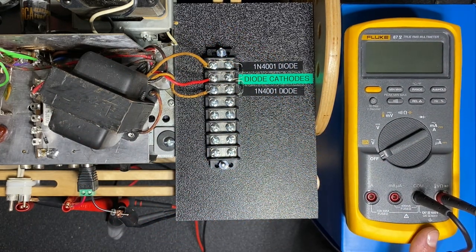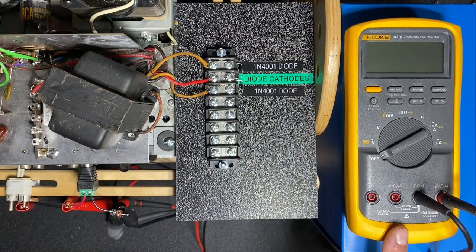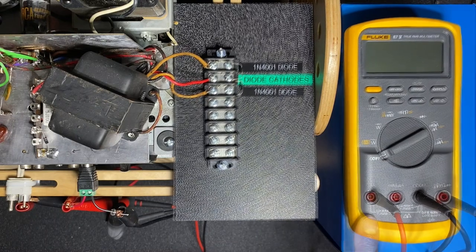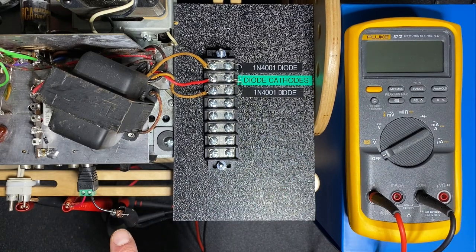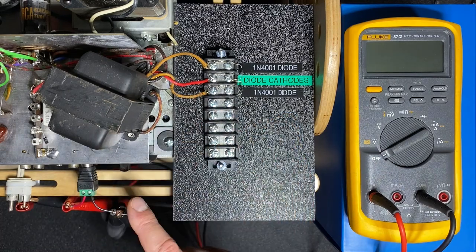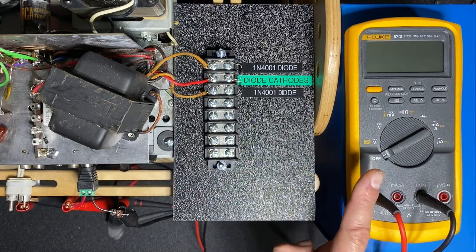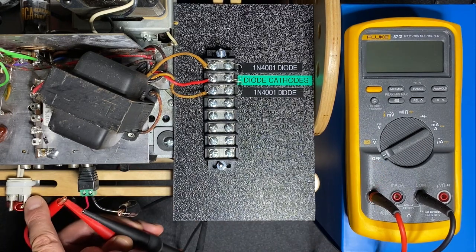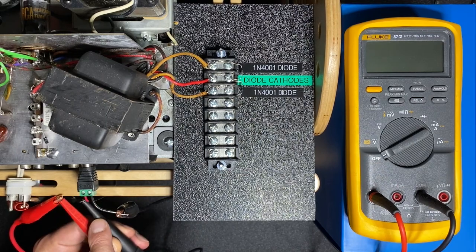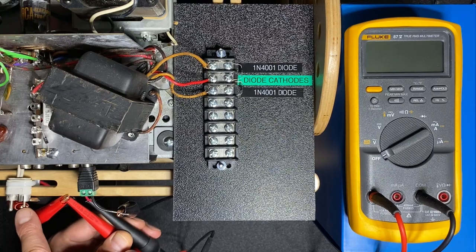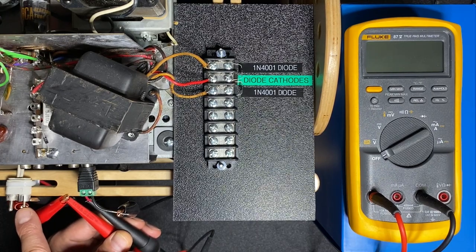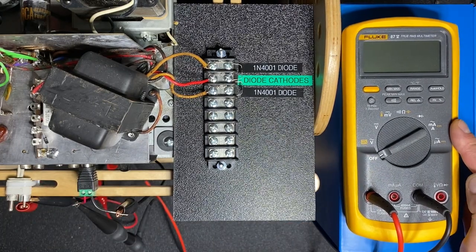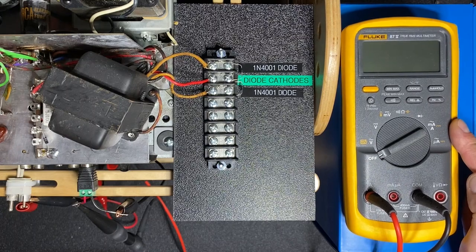To do this let's change the probe setup for the fluke from measuring voltage to measuring current. The common probe will stay where it is but our red probe will move to the amp position. Additionally we need to change where the probes are connected to our circuit. They're not connected in parallel which is fine for measuring voltage but for measuring current we need to put the fluke in series with the circuit. In this configuration the negative voltage will flow directly to the outboard amp but the positive voltage from our red wire flows into the fluke first then comes out of the fluke and is sent to the positive terminal of the outboard amp. So the current is flowing directly through the fluke so that it can measure that current.